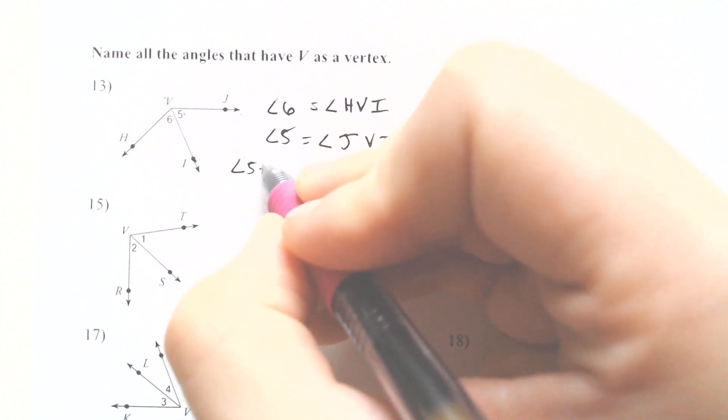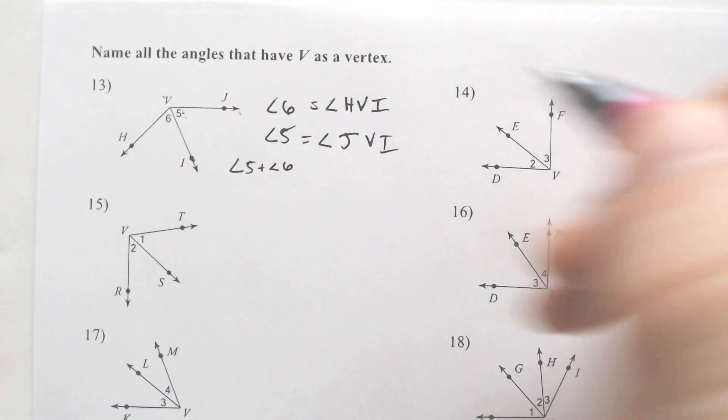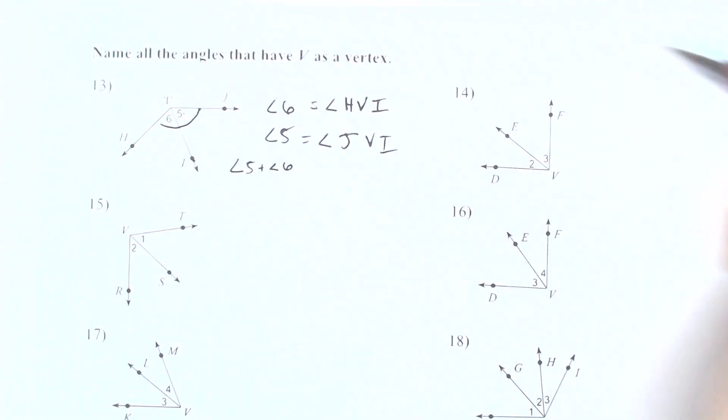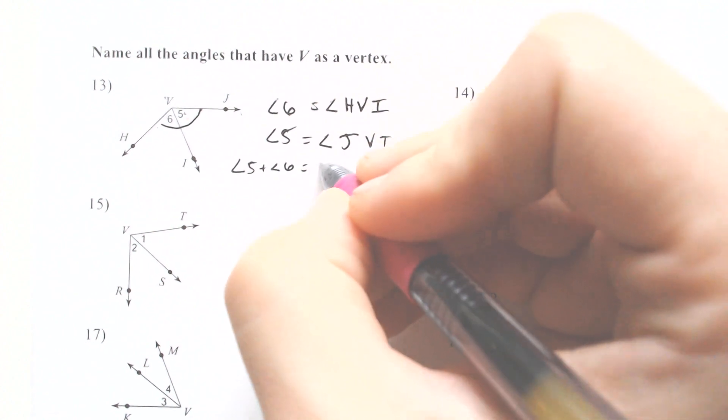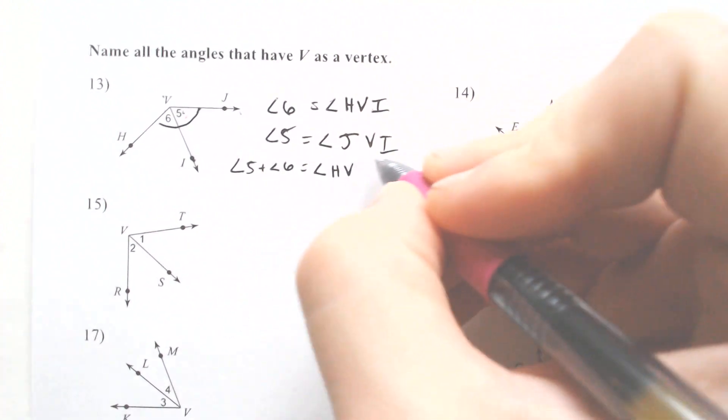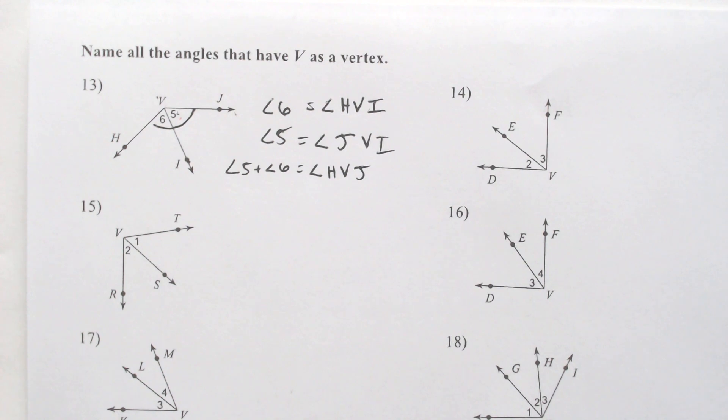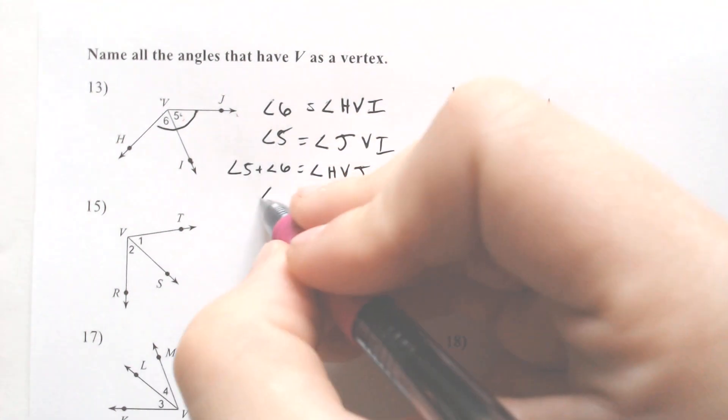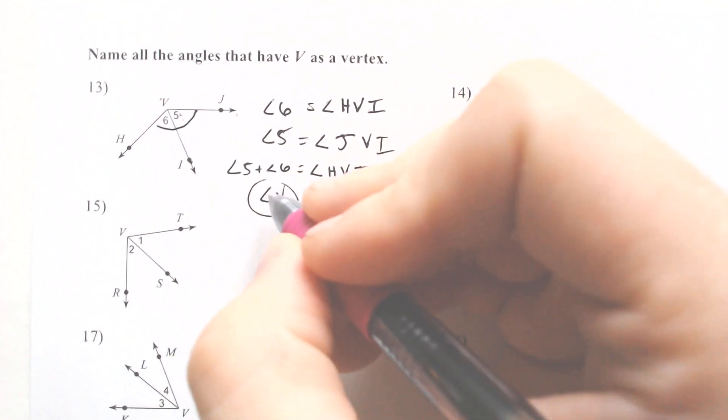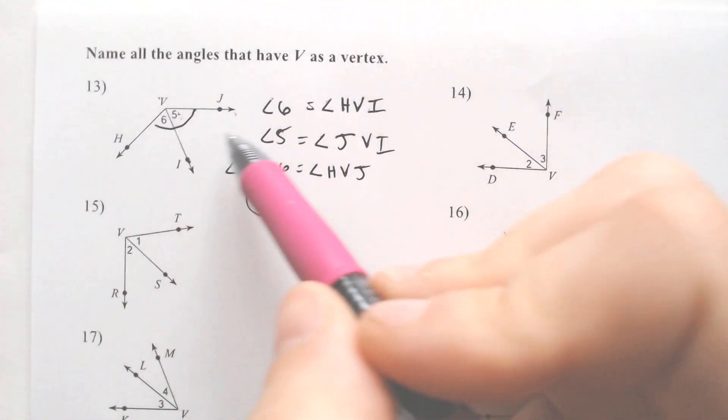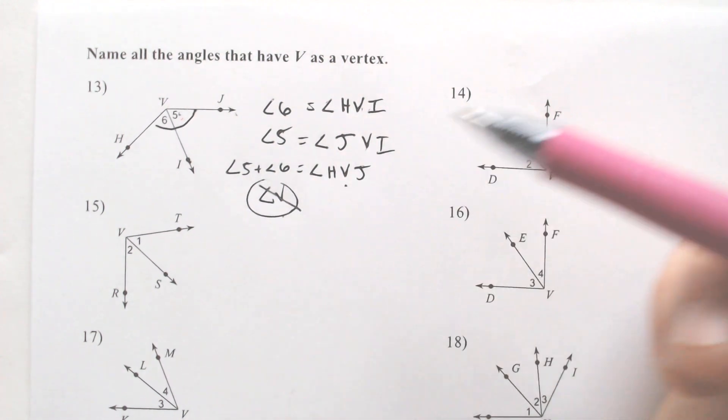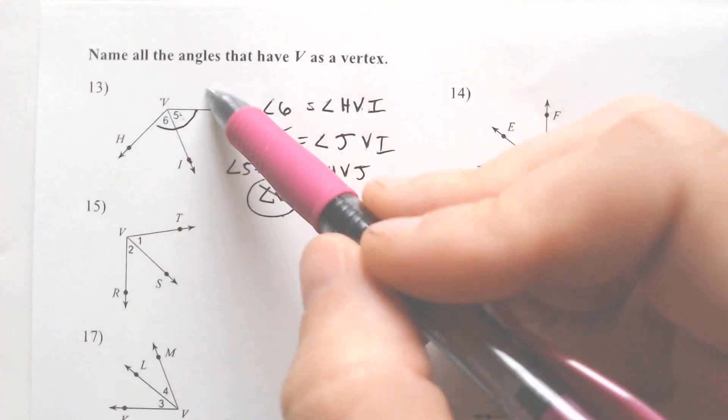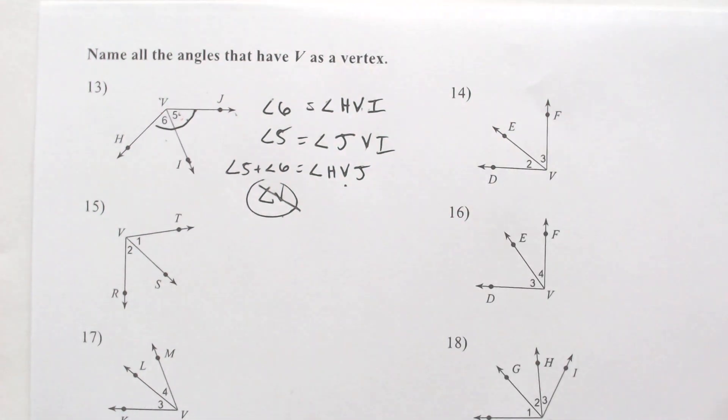And lastly, we have the entire angle, which would be angle 5 and 6 put together. You don't necessarily need to write angle 5 and 6 put together, but that entire angle still has V in the middle. And that would be called angle H V J. Notice how none of these angles I can call angle V. I cannot do that. That is a big no-no, because angle V relates to all three of these. And it has V in the middle for all three. So if you just said angle V, you'd be like, well, which one are you talking about? Are you talking about the big one? Are you talking about angle 5 or angle 6? We don't know.